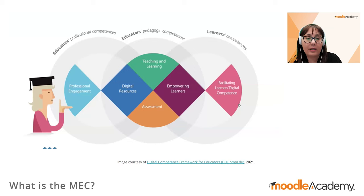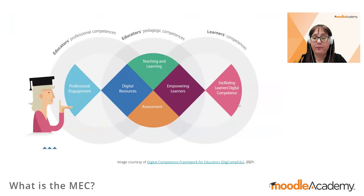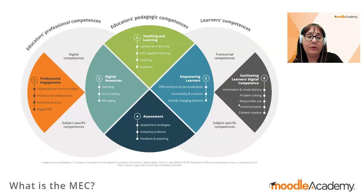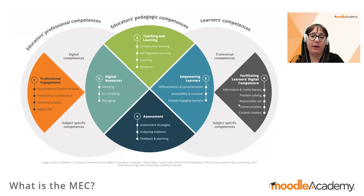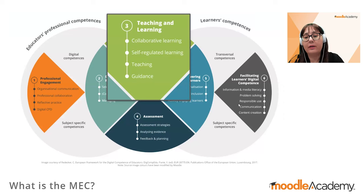The six areas of DigCompEdu are: professional engagement, teaching and learning, digital resources, assessment, empowering learners, and facilitating learners' digital competence. Overall, this framework contains 22 competencies organized across these six areas. For example, in the teaching and learning area we discuss collaborative learning, self-regulated learning, teaching, and guidance.